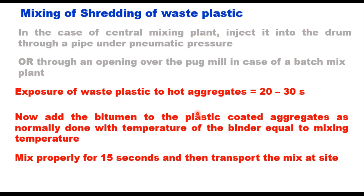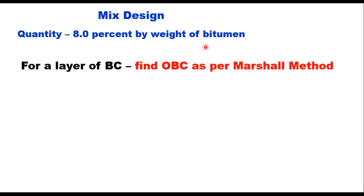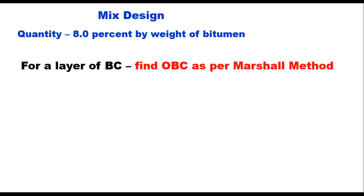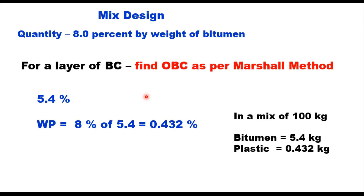In the case of thick wearing courses like bituminous concrete (BC), there is no change in the mix design. The only addition is that the quantity of waste plastic will be 8 percent by weight of the bitumen, and the Marshall method of mix design will be used. For example, if the optimum binder content for a BC layer as per the Marshall method is obtained as 5.4 percent, then the waste plastic will be 8 percent of 5.4, which is 0.432 percent. So in a 100 kg mix, bitumen will be 5.4 kg and waste plastic will be 0.432 kg.